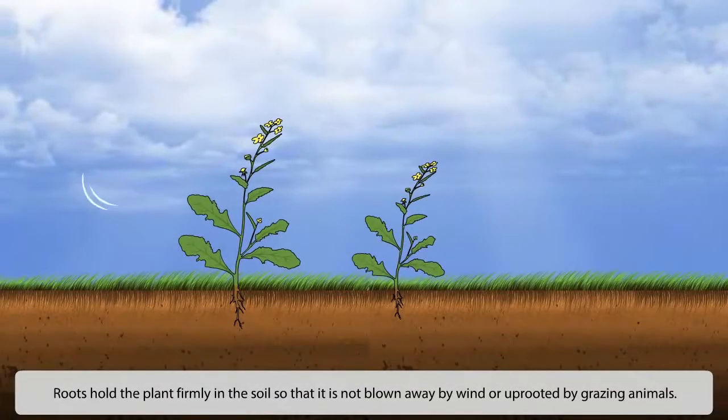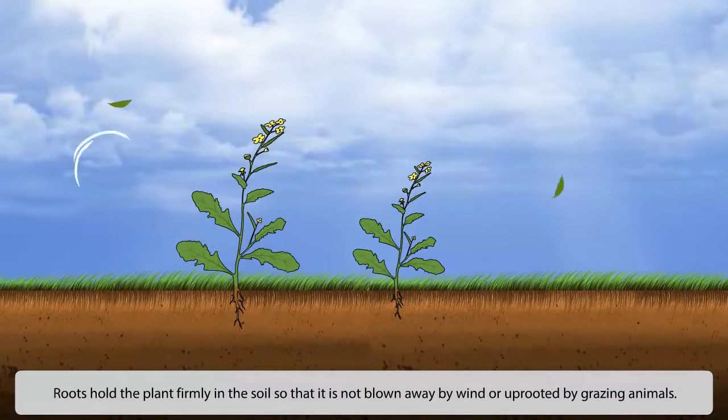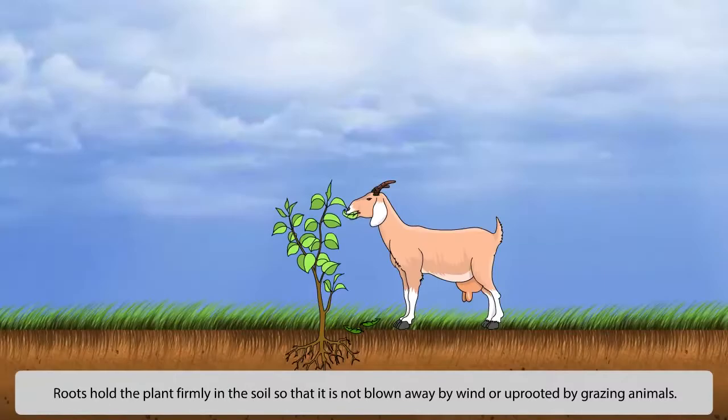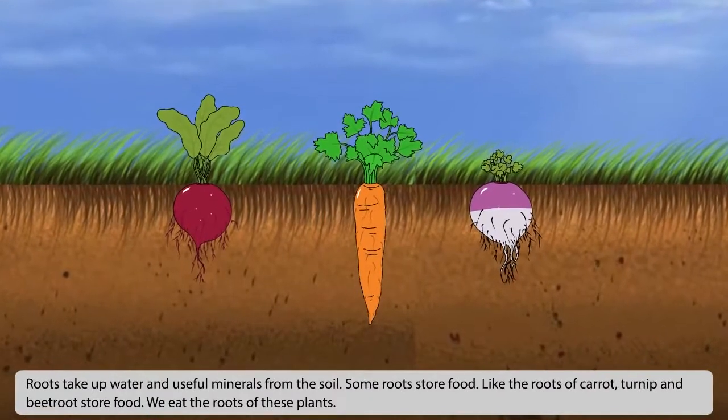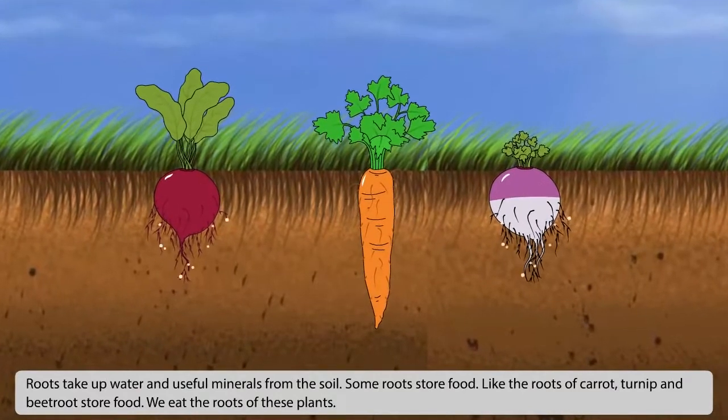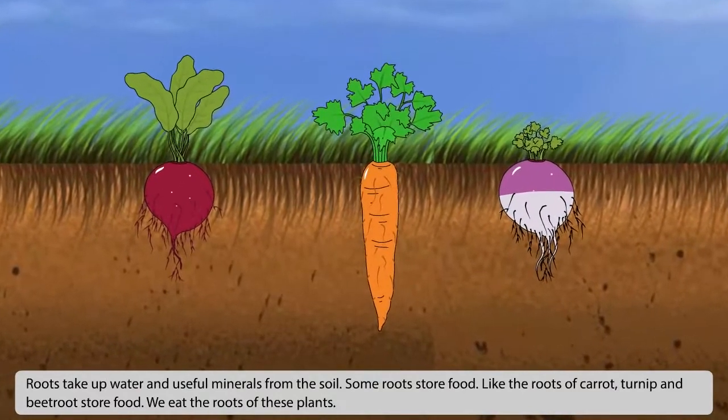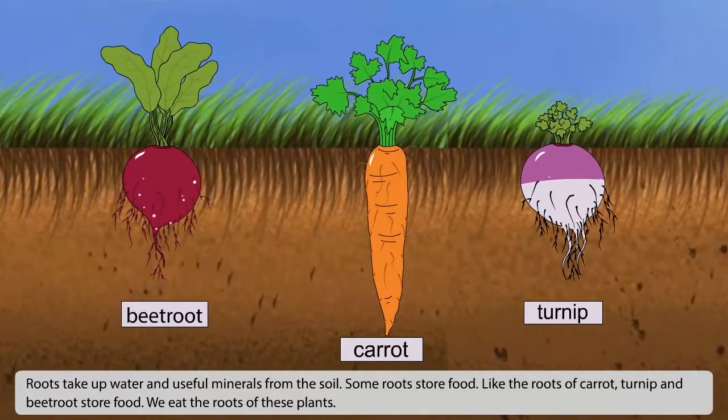Roots hold the plant firmly in the soil so that it is not blown away by wind or uprooted by grazing animals. Roots take up water and useful minerals from the soil. Some roots store food. The roots of carrot, turnip and beetroot store food. We eat the roots of these plants.